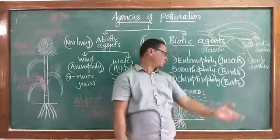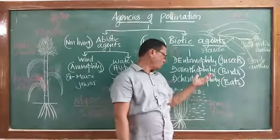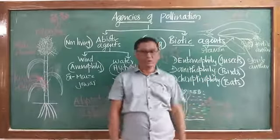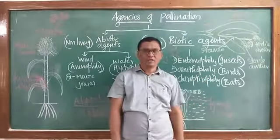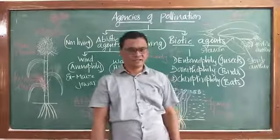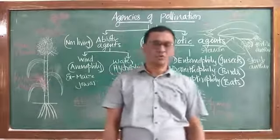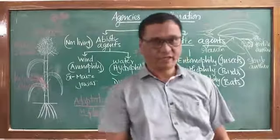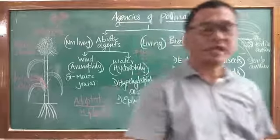Pollination brought about by insects is known as entomophily, and such flowers are known as entomophilous flowers. Ornithophily and chiropterophily will be discussed in the next period. Thank you.